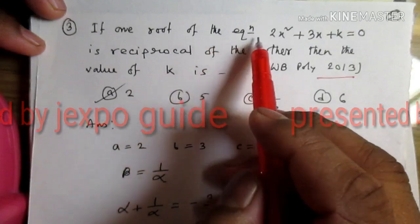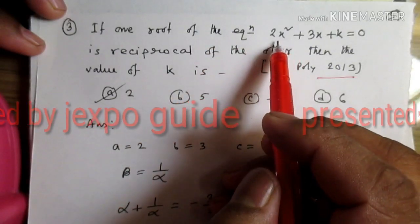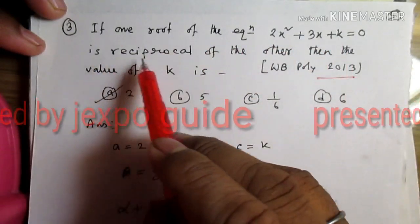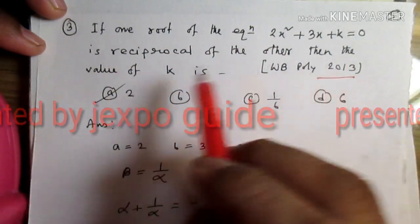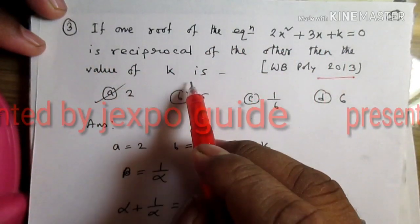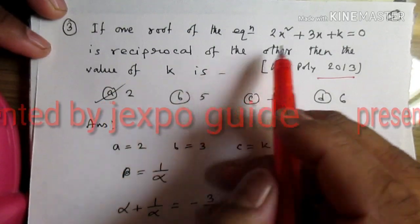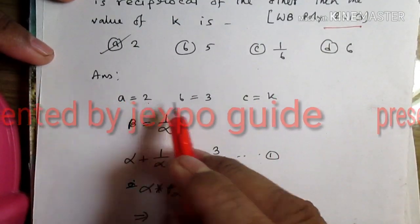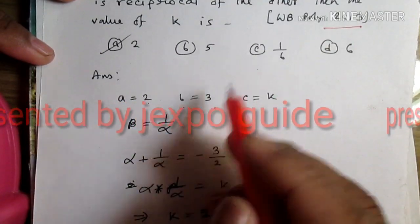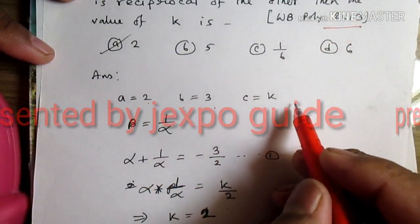Question number 3: if one root of the equation is the reciprocal of the other root, then find the value of K. Here a is equal to 2, b is equal to 3, and c is equal to K.